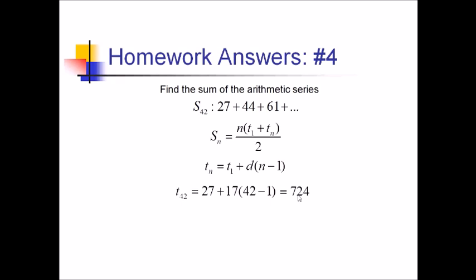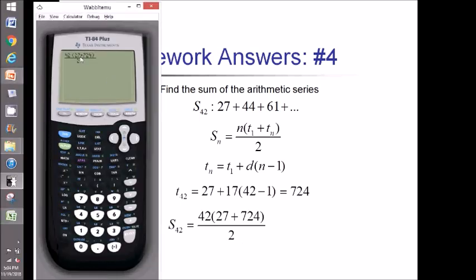That gives us something to plug in. So in our original formula now, we have 42 times 27 plus 724, all over 2. Not doing that in my head either. Calculator time. Plugging all that in, we end up with 15,771.